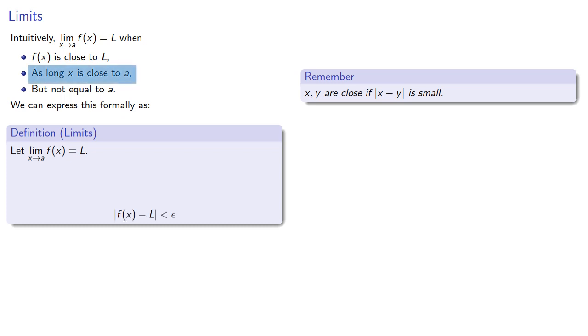We also want x to be close to a. So we can think about x and a being some distance delta apart, absolute value of x minus a less than delta. We also want x not to be equal to a, and so we can guarantee that by also requiring this absolute difference be greater than zero.